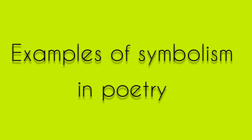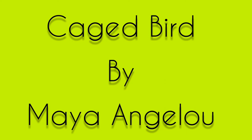Example one: In Maya Angelou's 'Caged Bird,' the free bird is a symbol of all free people in American society, while the caged bird is a symbol of all African-Americans living in the captivity of the social norms of American society.